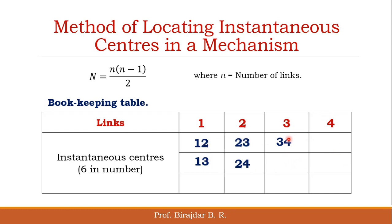We found 5 instantaneous centers, but according to the formula there are 6. So we move to the next row — the third row, with 2 gaps in between. Below 1, skipping 2 gaps, we get 1-4. So these are the 6 instantaneous centers. By using this bookkeeping table method, we can find out all 6 different instantaneous centers.